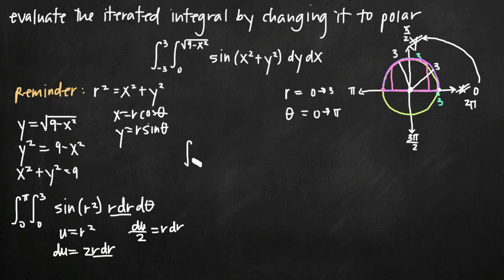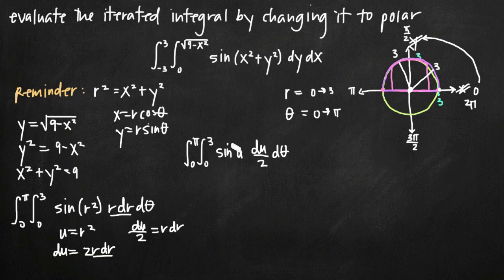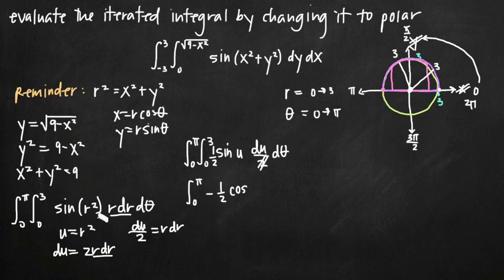After substituting, we get the integral from 0 to pi, of the integral from 0 to 3 of sine of u, times du over 2, times d theta. The 1/2 in the denominator can be pulled out front as one half, giving us one half times the integral of sine of u. Since the integral of sine is negative cosine, we get negative one half times cosine of u. Back-substituting u equals r squared, we get negative one half cosine of r squared, evaluated on the interval 0 to 3.